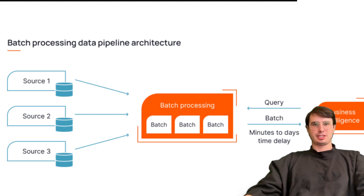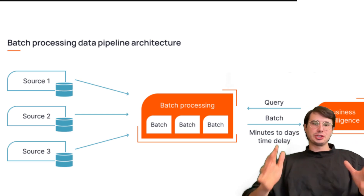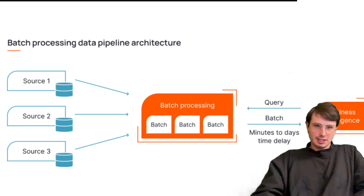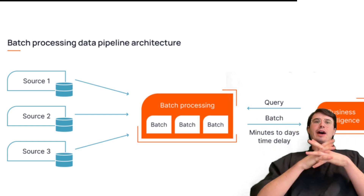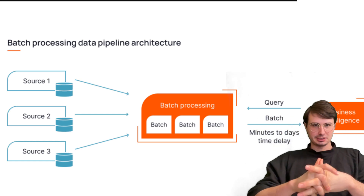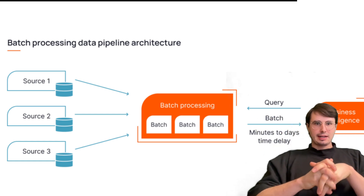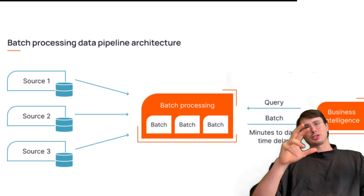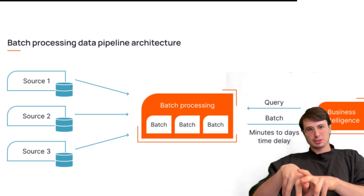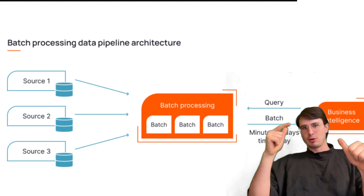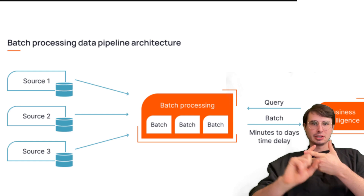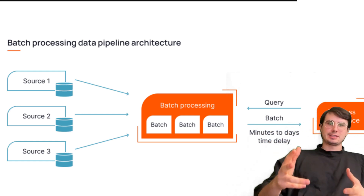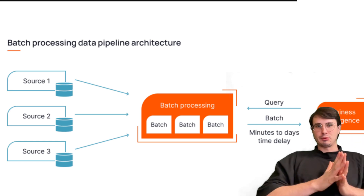The first and probably most common question I've seen is: how would you design a data pipeline for X? In this case, how do you design a data pipeline for batch processing? The main thing you're going to want to focus on is discussing the architecture and tools you would use, as well as emphasizing how you're promoting scalability, reliability, and efficiency.